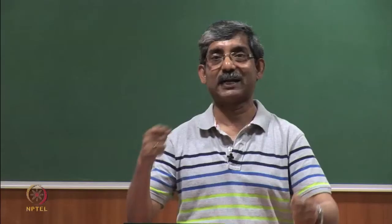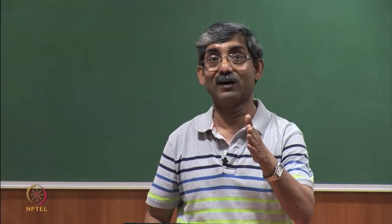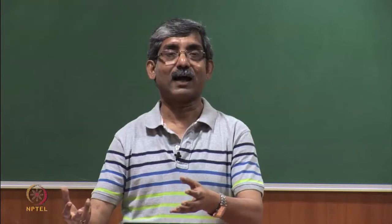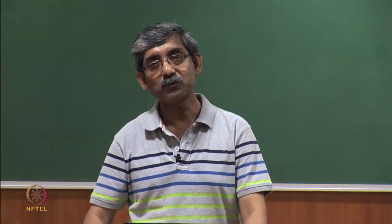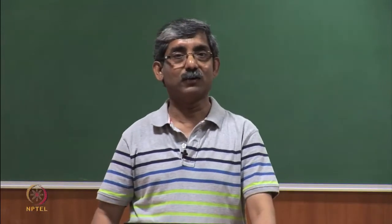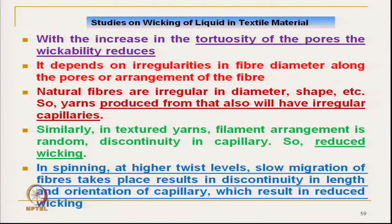For polyester filament, if we texture it, its tactile characteristics and softness improve. But moisture transmission in liquid form is reduced — wicking is reduced — because of discontinuity and non-uniformity in the capillary channel, reducing total capillary pressure and capillary flow. Comparing textured filament versus normal flat filament: textured filament fabric may absorb more moisture, but wicking will be slow. In staple fibre spinning at high twist level, slow migration of fibre takes place with discontinuity in wicking length, creating lower wicking rate.